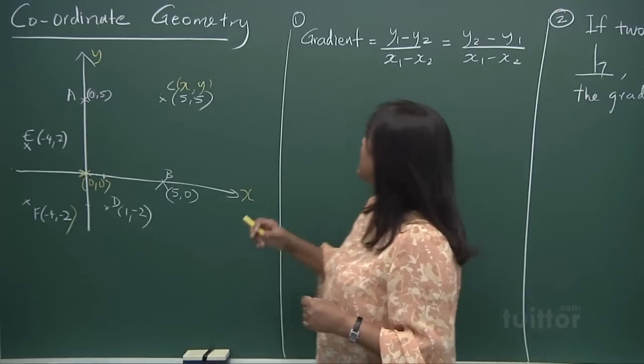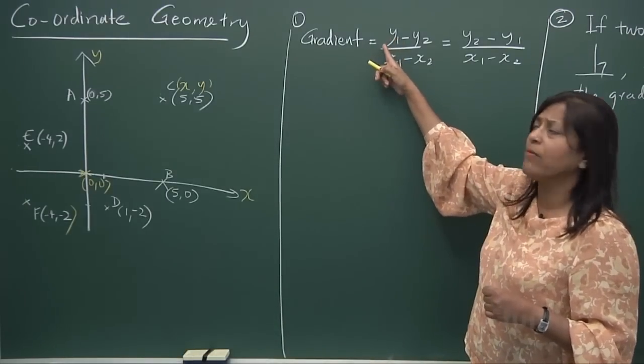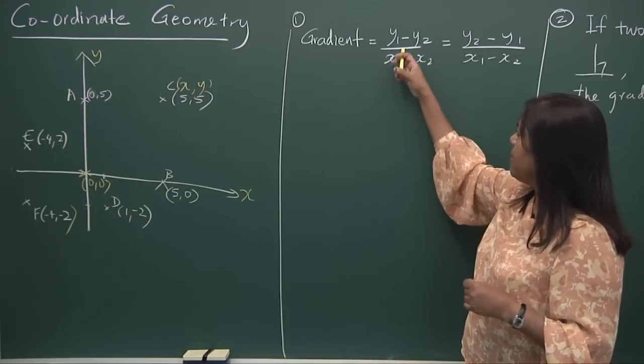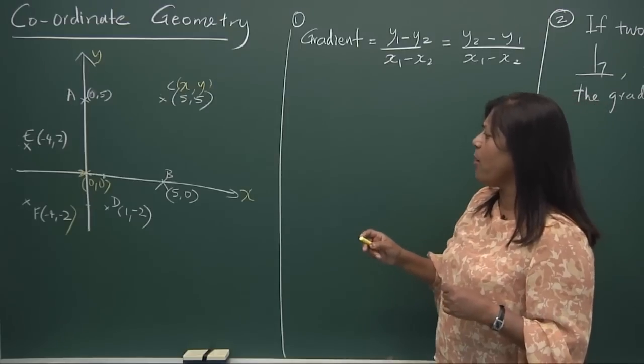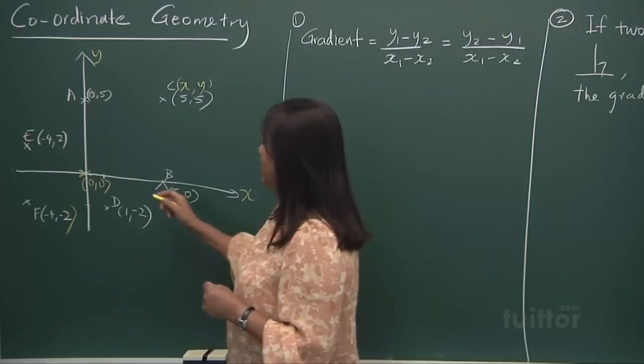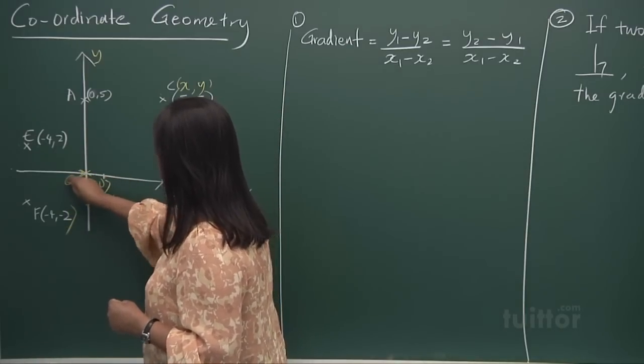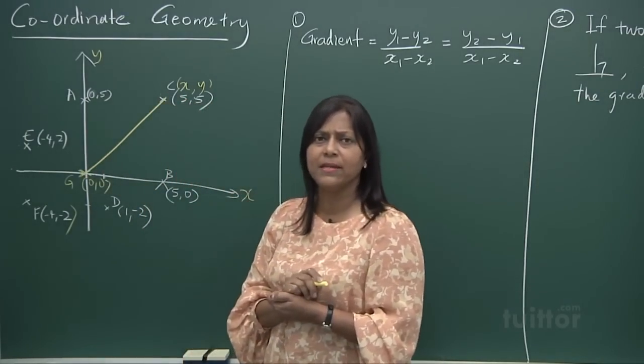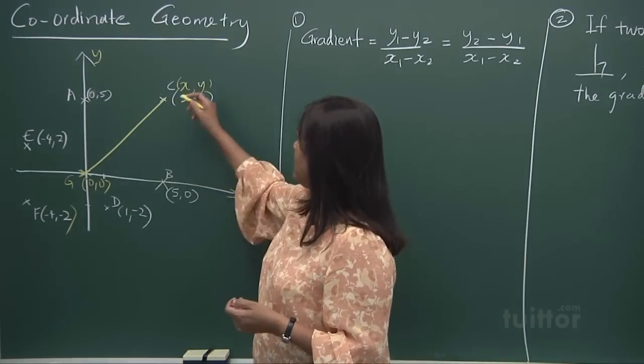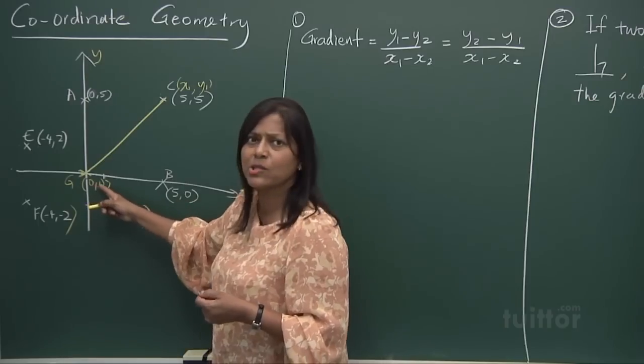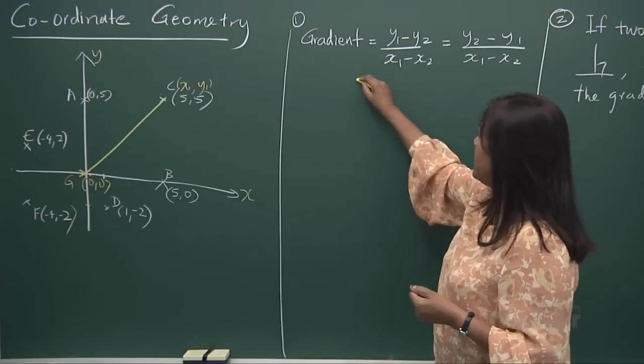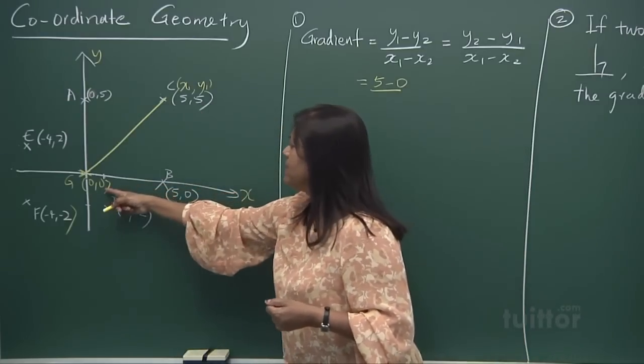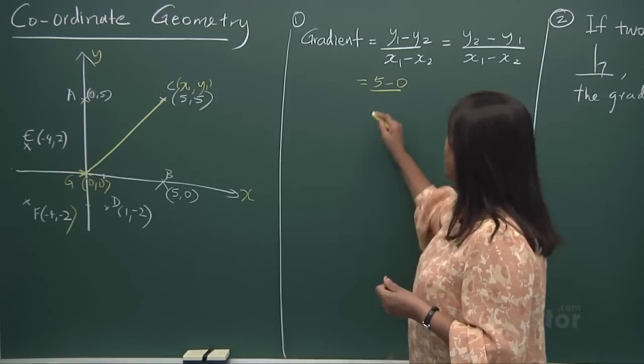Now let's move on and see how we find gradient. The gradient is actually one point of the Y to another point. The rise. One Y going to another Y. And the run. From X1 to X2. Let's take two points and find out the gradient. Now let's look at here. Let me call this as G. Zero, zero. And I'm going to join G to C. What is the gradient of GC? So we take this as X1, Y1. And this will be X2, Y2. So let's look at it. So we get the Y. Five minus a zero. Over five minus a zero.